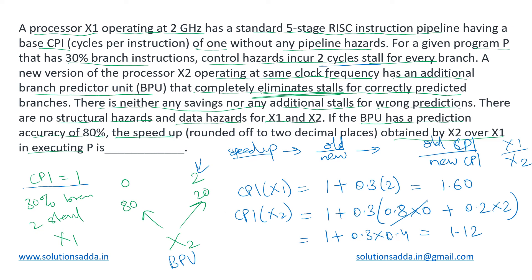Now the speed-up ratio is old CPI divided by new CPI: 1.60 divided by 1.12, which equals 1.43. This is the speed-up achieved when we replace processor X1 with processor X2. So the answer is 1.43.